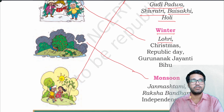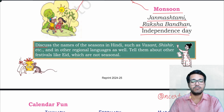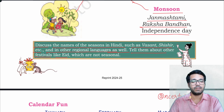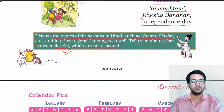During winter season you see Lohri, Christmas, Republic Day, Guru Nanak Jayanti and Bihu. During monsoon season you celebrate Janmashtami, Rakshabandhan and Independence Day. Note to the teacher: Discuss the names of seasons in Hindi such as Basant, Shishir, etc., and in other regional languages. Tell them about other festivals like Eid which are not seasonal — Eid depends on the moon, not the season, so Eid is not a seasonal festival.